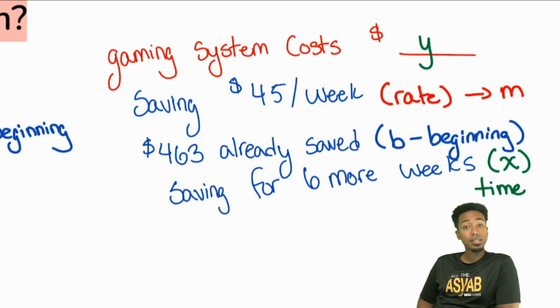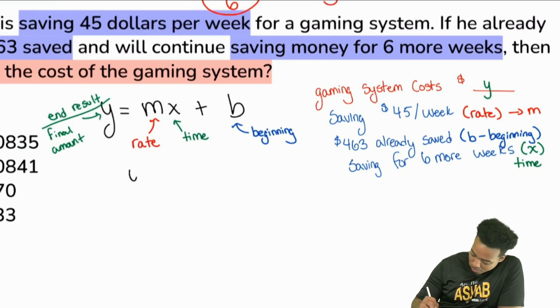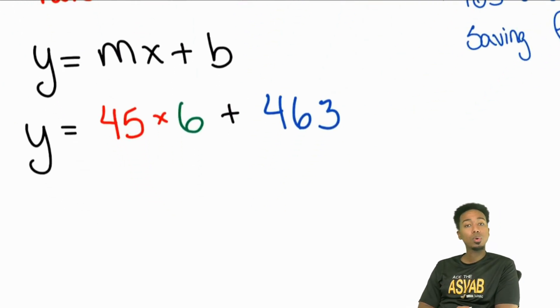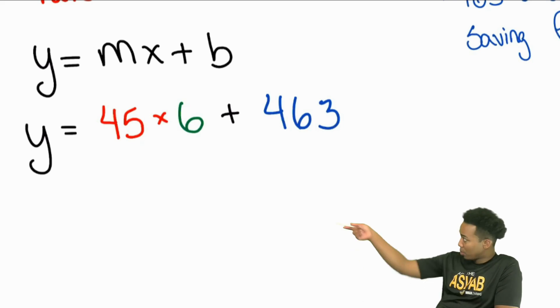Good. Now, with that said, let's go ahead, plug this information into the formula and let's see what we got to do. Y equals MX plus B and I'm going to replace everything in a moment. So our M was $45 per week. We have that right there. Our X, the time that we are saving for was six weeks. And then from the beginning, we will add on what we had in the beginning. And that's going to be the $463. And there it is. Now that we know where everything belongs, this is actually kind of straightforward. Would you guys agree?